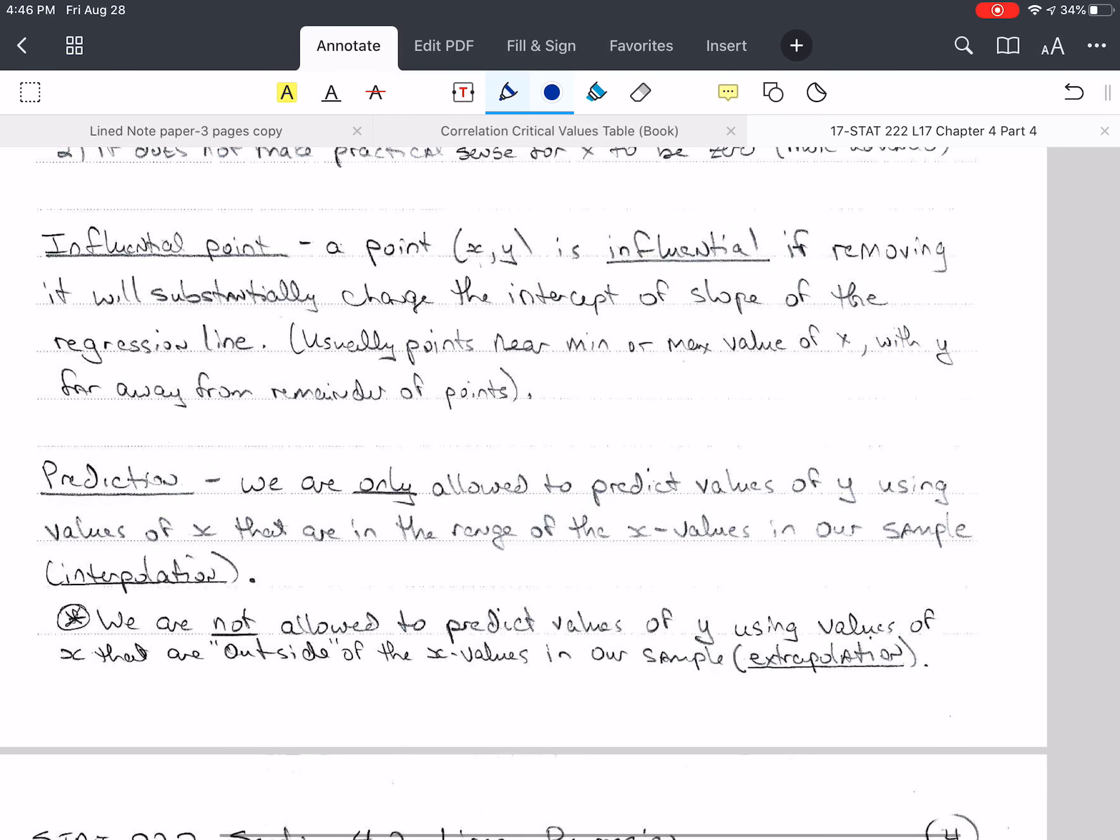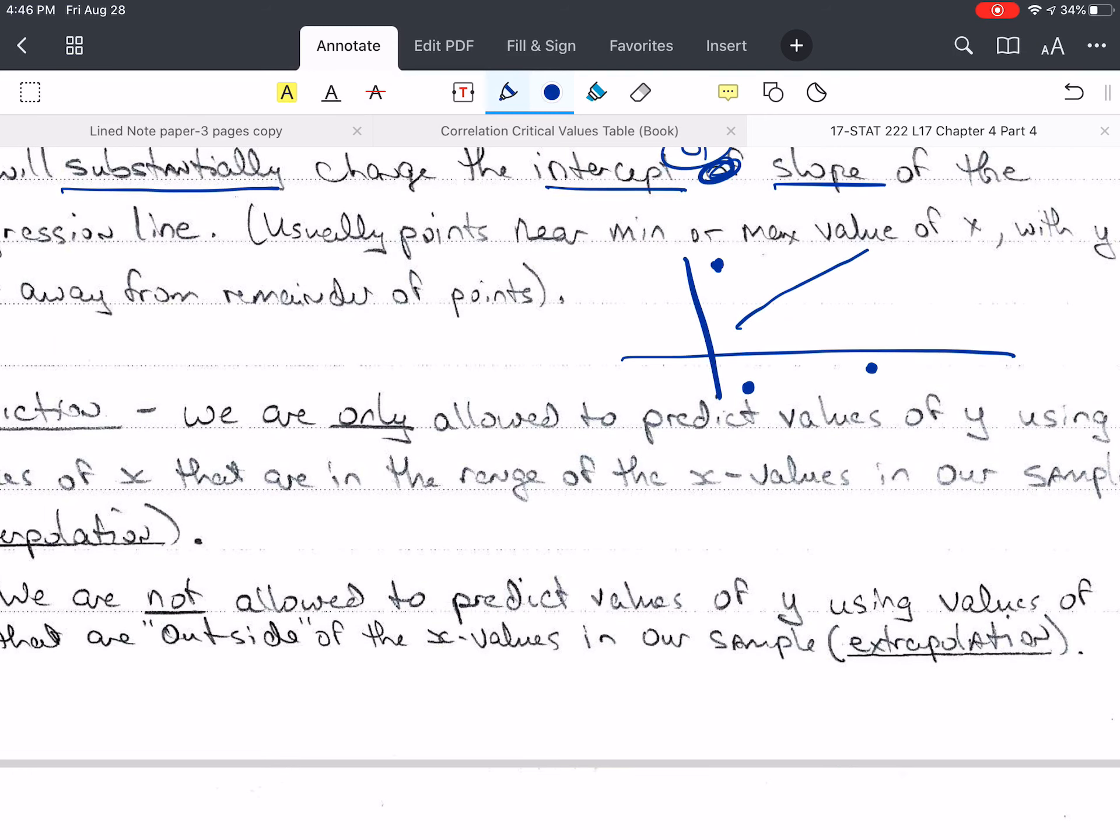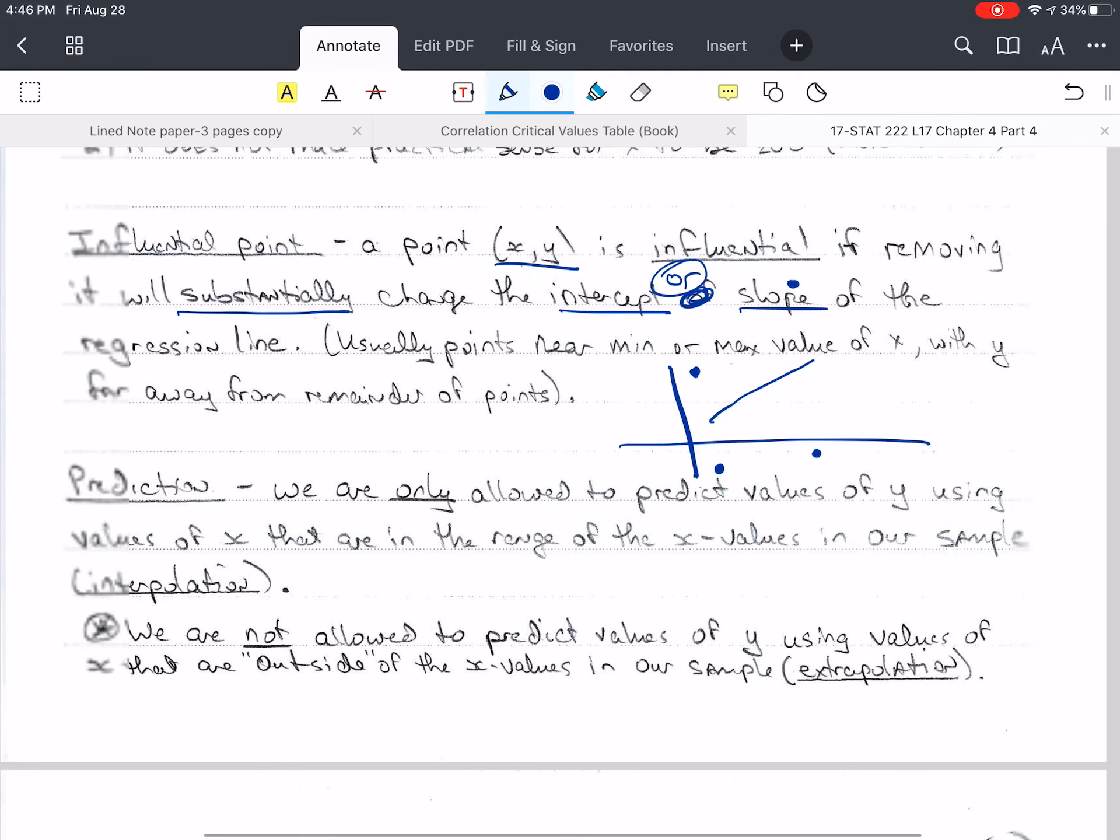An influential point is a point, an x, y point, that is influential. We determine this if removing this point will substantially change the intercept or the slope of the regression line or both. These are points that are usually near the lower values of x. It could be way down here, or it could be way up here. Or it's going to be far away from the line. It could be something like this, or this point could be way up here.